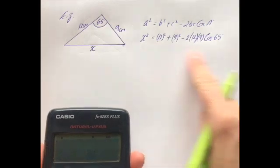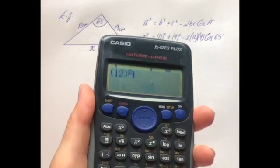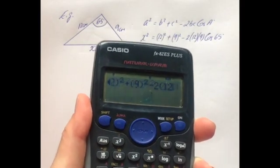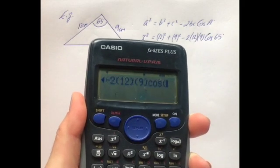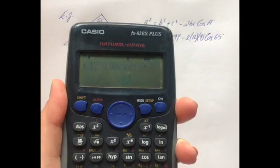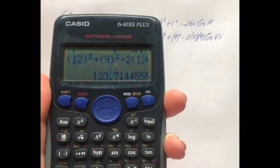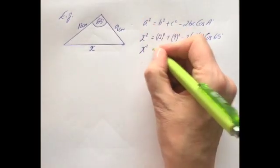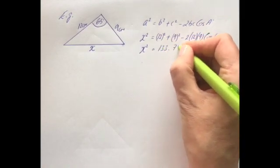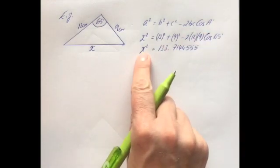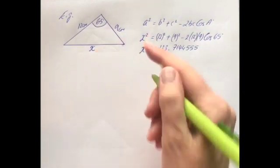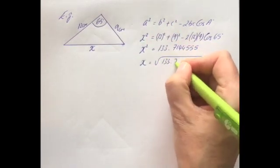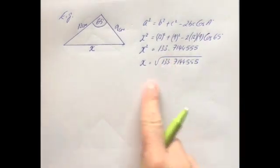On the calculator, being very careful to type it in exactly: bracket 12 squared, plus bracket 9 squared, minus 2 times bracket 12, bracket 9, close brackets, cosine 65, close bracket. The result is 133.7144555. Write the whole thing out — x² = 133.7144555. Now the final step is to solve for x by taking the square root.